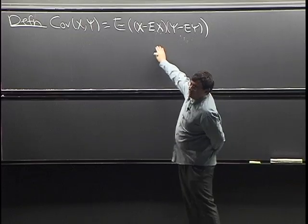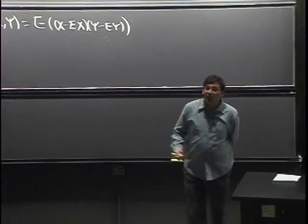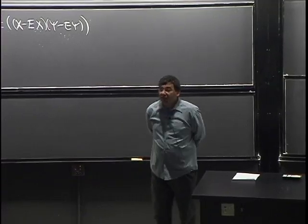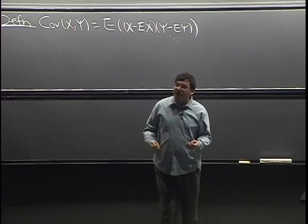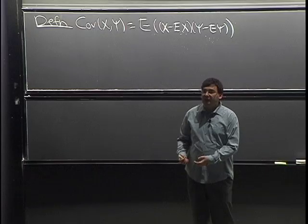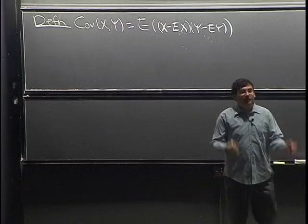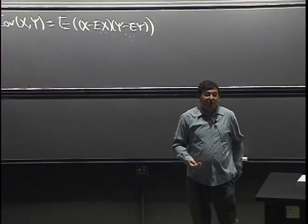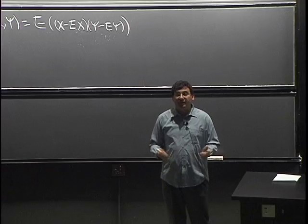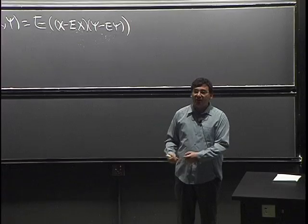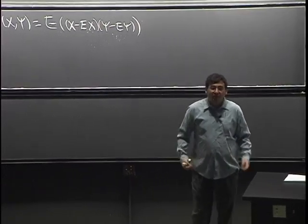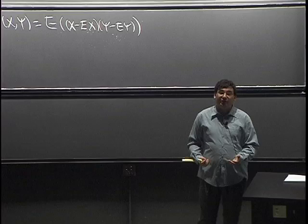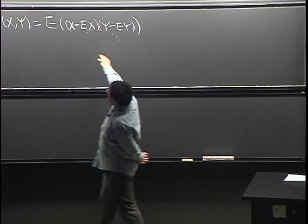We know that a positive times a positive is positive, negative times negative is positive, and positive times negative is negative. So if in that random sample, most of the time when X is above its mean then Y is also above its mean, you're getting positive times positive. And if X is below its mean it tends to imply Y is below its mean — negative times negative is again positive. So if X being above its mean tends to imply Y is above its mean, we say they're positively correlated. If X above its mean tends to imply Y below its mean, we say they're negatively correlated. This is just a measure of that.